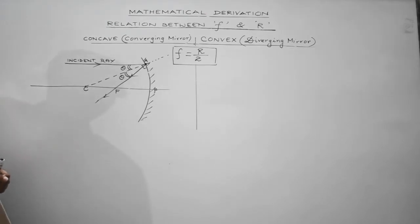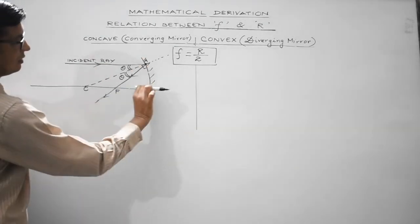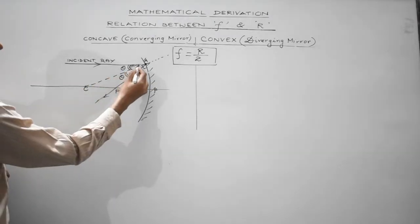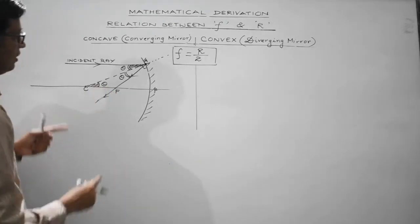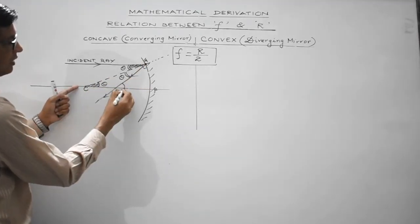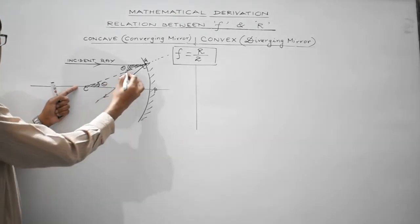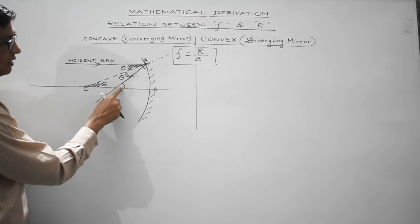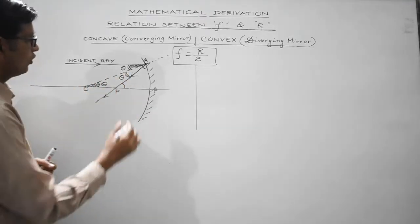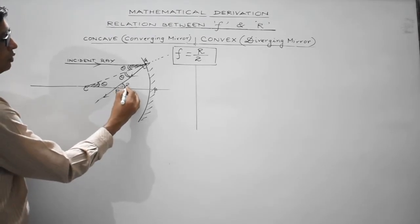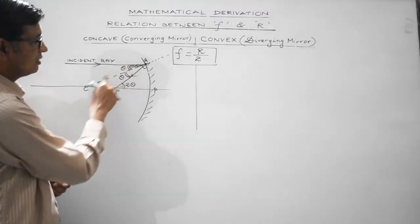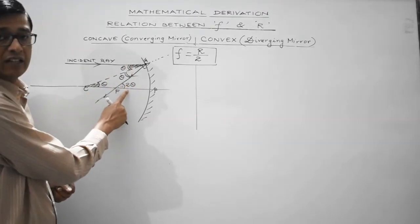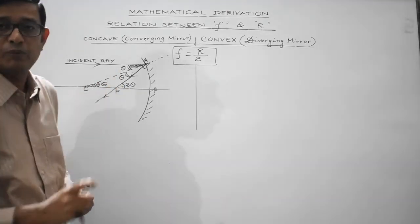Now making use of basic mathematical concepts: the incident ray and principal axis are parallel lines, and CA acts as a transversal, so this angle equals theta — pair of alternate interior angles. Similarly, considering the triangle formed, the exterior angle equals the sum of the two opposite interior angles. So this exterior angle is 2 theta. These are the pair of alternate interior angles, and this angle is 2 theta because it is the exterior angle.